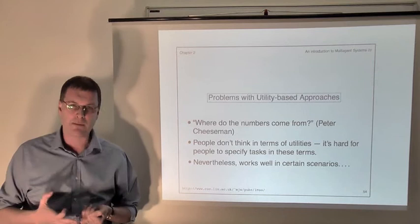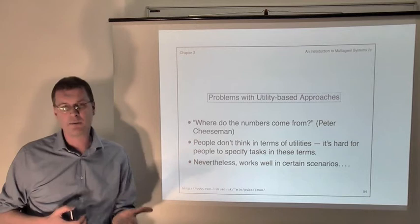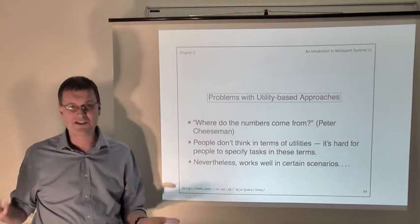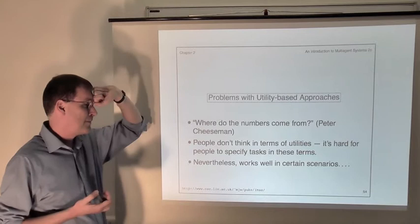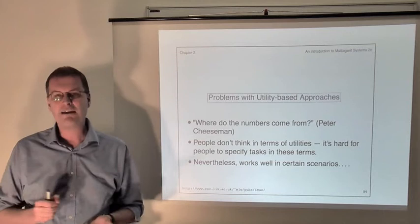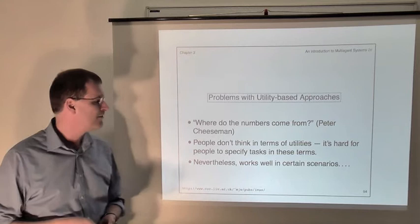One generic problem with these utility function type approaches is that, to put it bluntly, people find it very difficult to think in terms of numbers. So when I delegate a task like 'arrange me a flight to Toronto' with my secretary, I'm not specifying that task in terms of numbers — that's not how I formulate the task. So this is a generic difficulty with these numeric approaches. Nevertheless, the approach works well in certain circumstances — for example, if you can give a precise numeric interpretation to utility, such as if utility is simply the amount of money earned, then the approach can work very, very well.